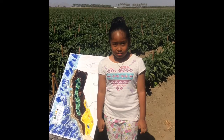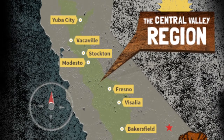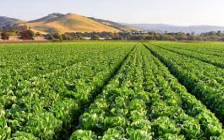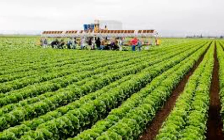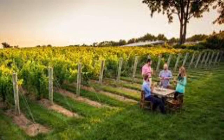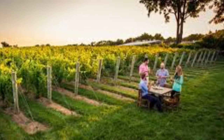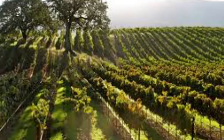The California Aqueduct is used to move water to irrigate Central Valley farmland. The California Delta is where the Sacramento River and San Joaquin River join and flow into the San Francisco Bay. Hope you enjoy the pictures of the Central Valley — lettuce fields in the Central Valley, California. Central Valley is also rich in grape fields.